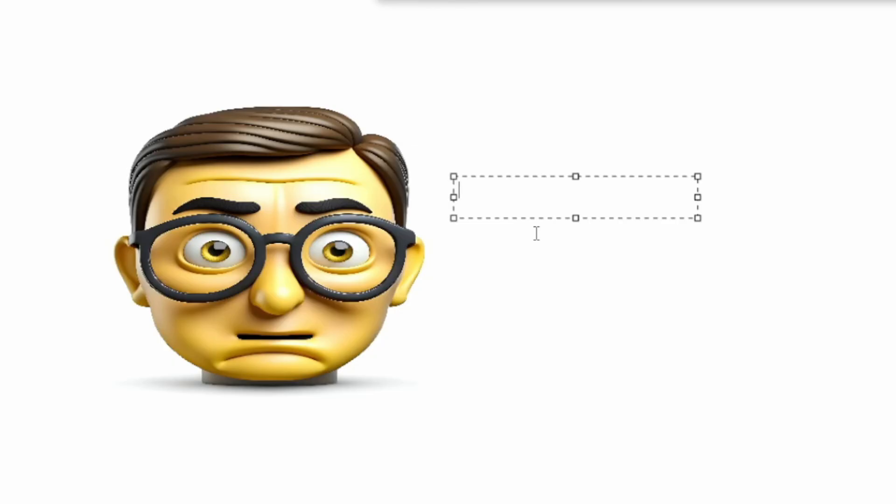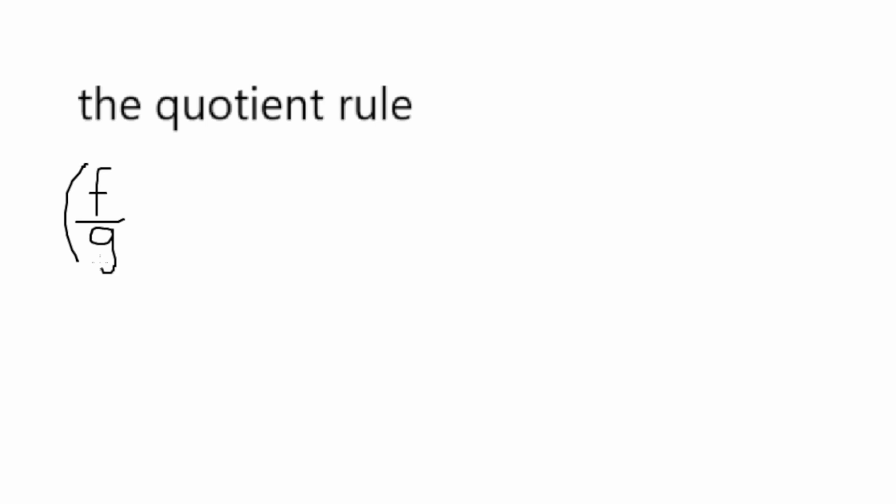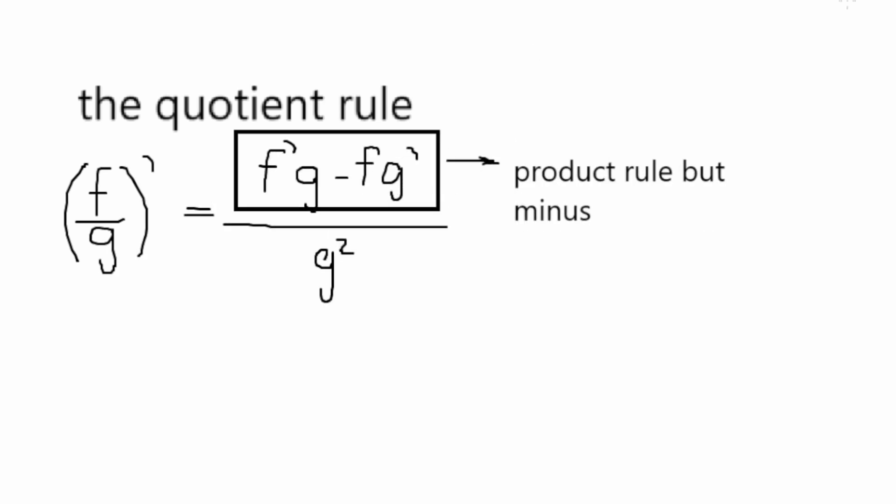The quotient rule is quite similar. However, it is of course involving fractions. Of course it is. Of course we go shopping while eating a chicken bake with Costco, guys. The derivative of f over g equals the product rule, but it's minus, and that's divided by the square of function g.